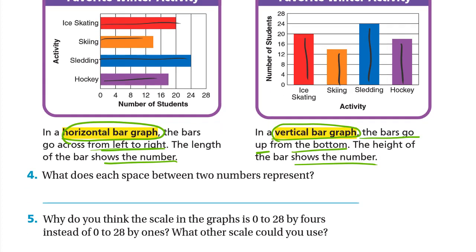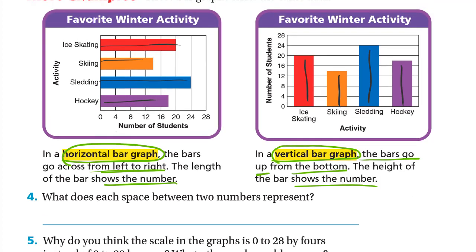What does each space between two numbers represent? These numbers represent the number of students. The scale counts by 4s: 0, 4, 8, 12, 16 — so each space here represents 4 students.